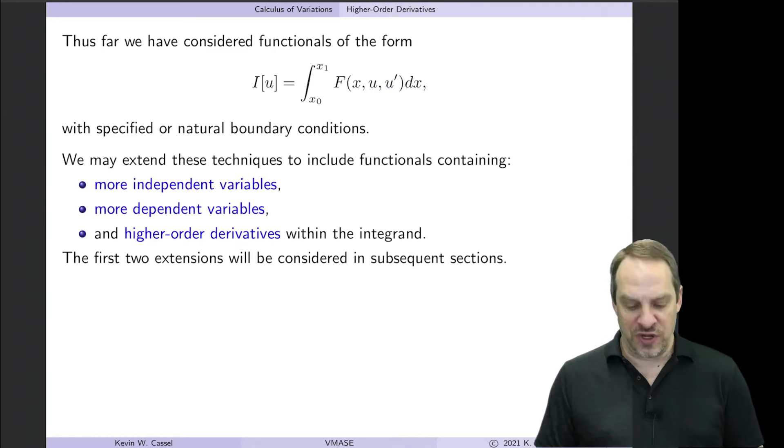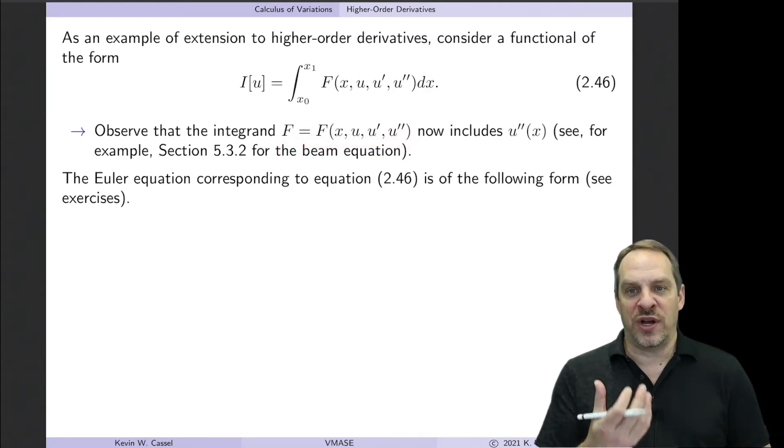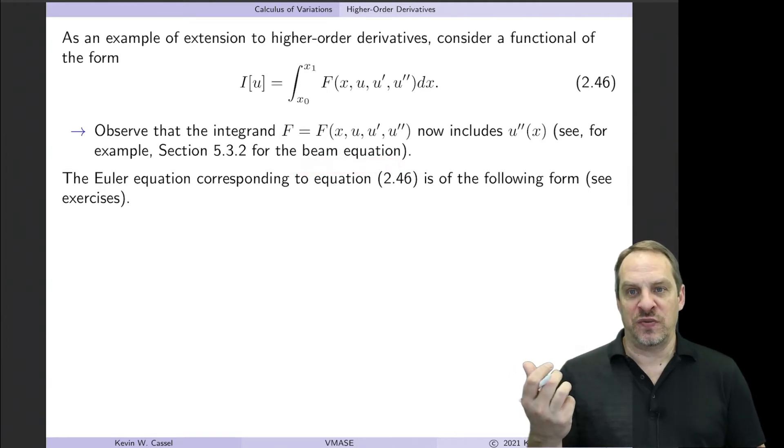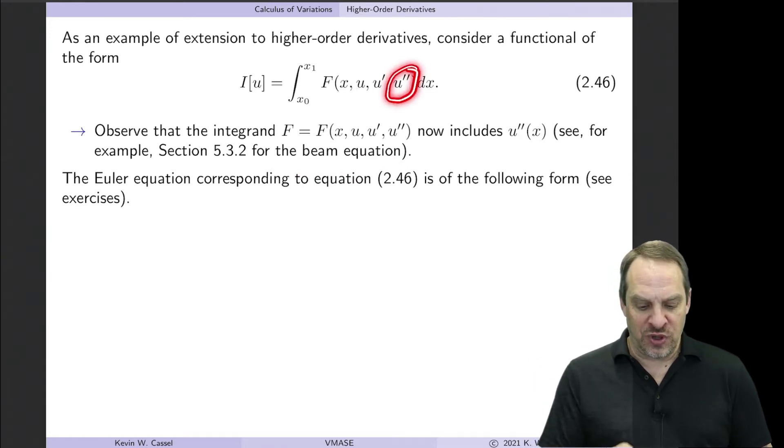So let's say we have a functional of one dependent variable, with only one independent variable, but now the dependent variable, its first derivative, and its second derivative as well. So now we have a new template for our integrand, capital F. So we need to derive a more general Euler equation for this case. This could arise, for example, in the beam equation, which is a fourth order equation, and a fourth order equation would result with second order derivatives inside the functional.